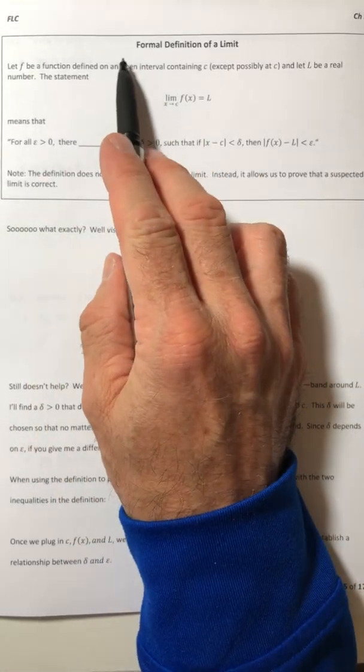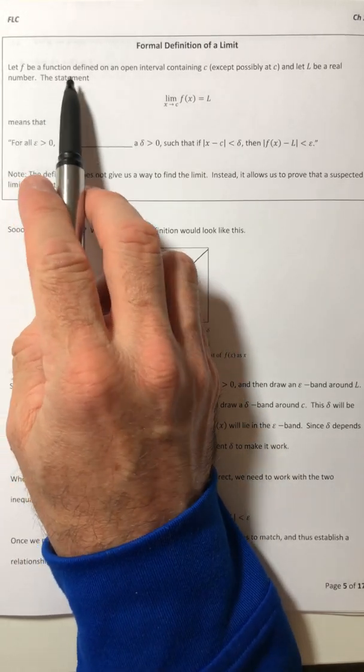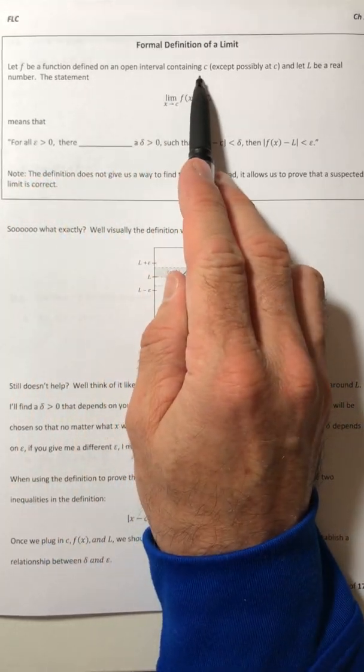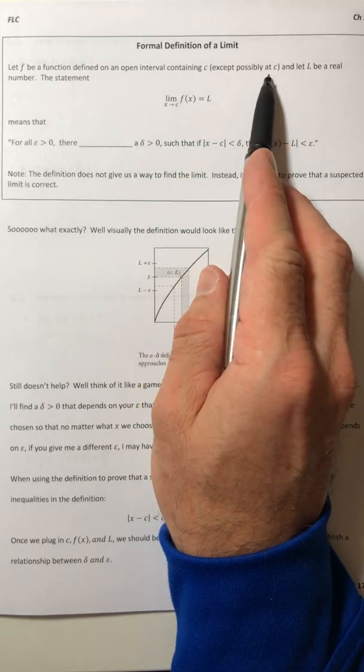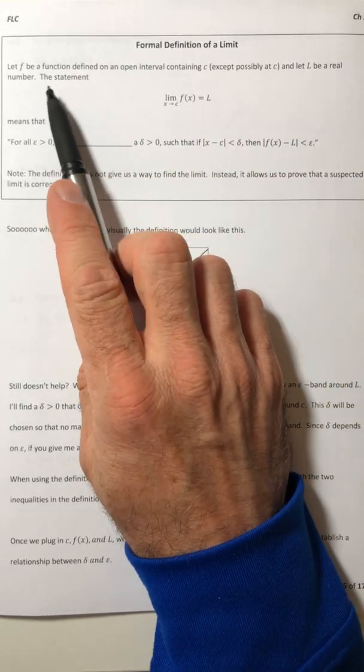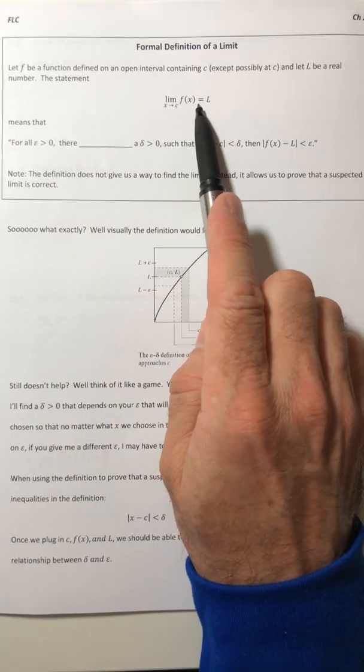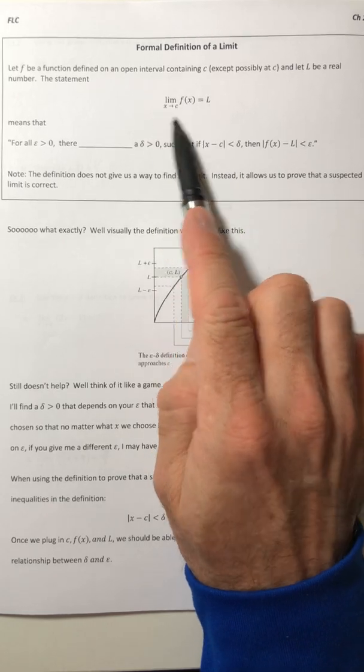Okay. So this is the formal definition of a limit. So let F be a function defined on an open interval containing C, except possibly at C, and let L be a real number. So the statement, the limit of F of X as X approaches C equals L. So when you see this, that means...